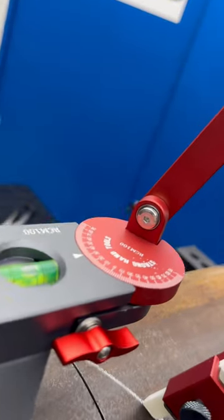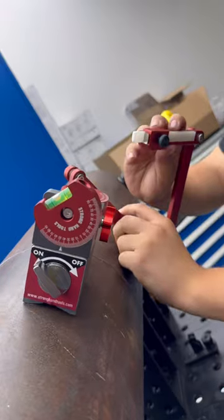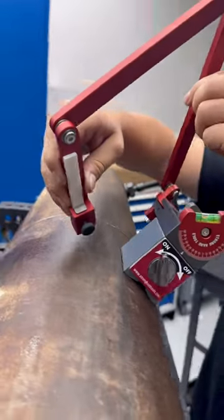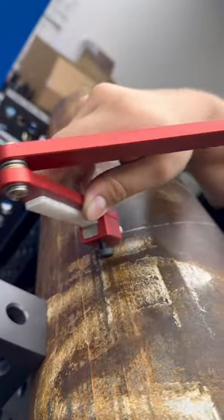This is the Round Corner Marker from Strong Hand Tools. Precisely mark on pipes from 2 to 10 inches in diameter, or curved or odd-shaped surfaces with a soapstone marker.